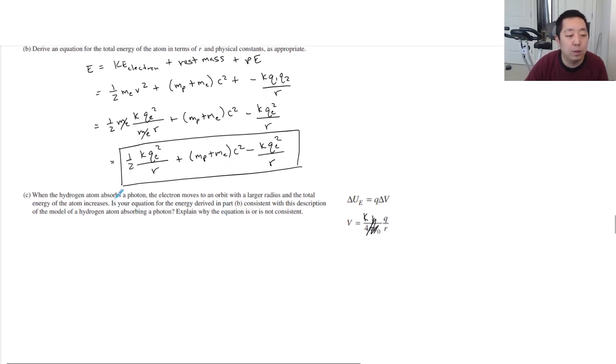Okay. When the hydrogen atom absorbs a photon, the electron moves into orbit with a larger radius, and the total energy of the atom increases. Is the equation for your energy driven part be consistent with this description? So let's combine these two terms. This is mp plus mc, or mass of the electron, C squared, and then this is minus one-half K QE over R squared.